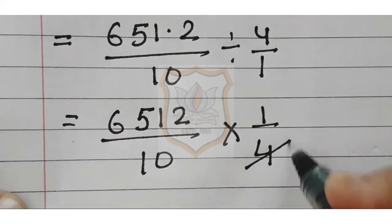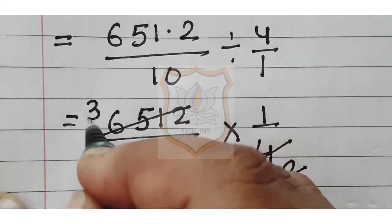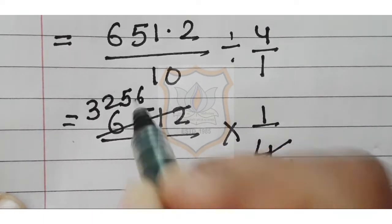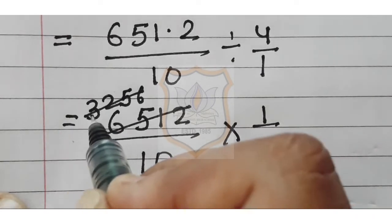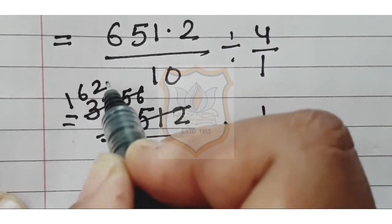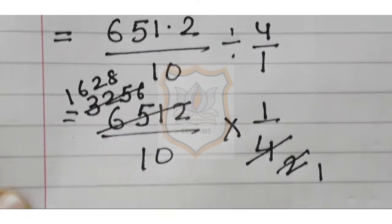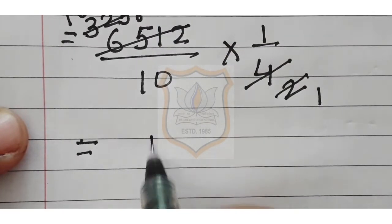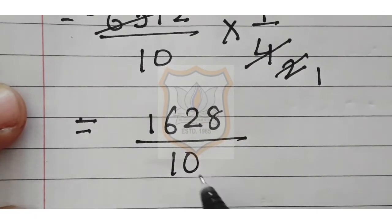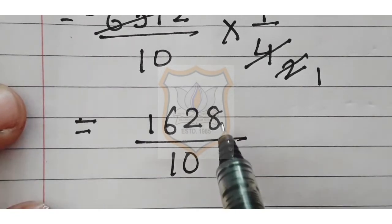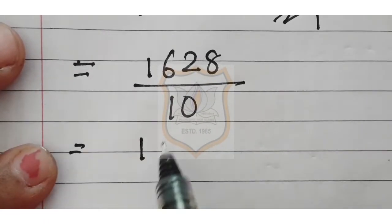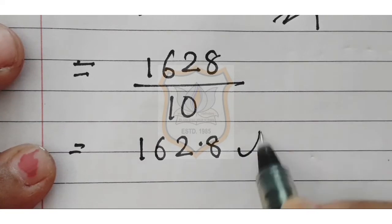That equals 6512 upon 10, multiplied by 1 upon 4. Computing: 2 twos are 4, 2 threes are 6, 2 twos are 4, 2 fives are 10, 2 sixes are 12, 2 ones are 2, 2 sixes are 12, 2 twos are 4, 2 eights are 16. The answer is 1628 upon 10. The denominator has 1 zero, so decimal moves 1 digit left. That is equal to 162.8. This is our answer.